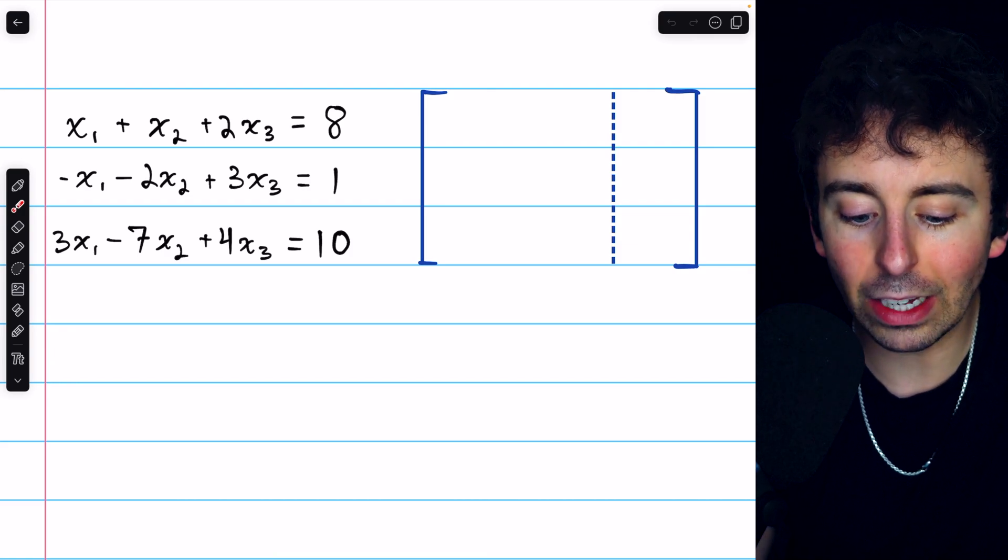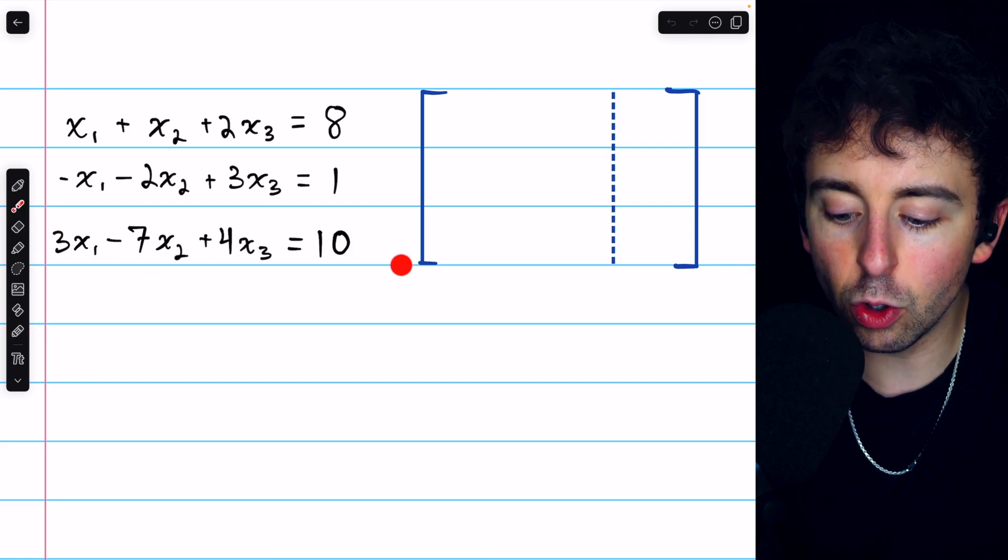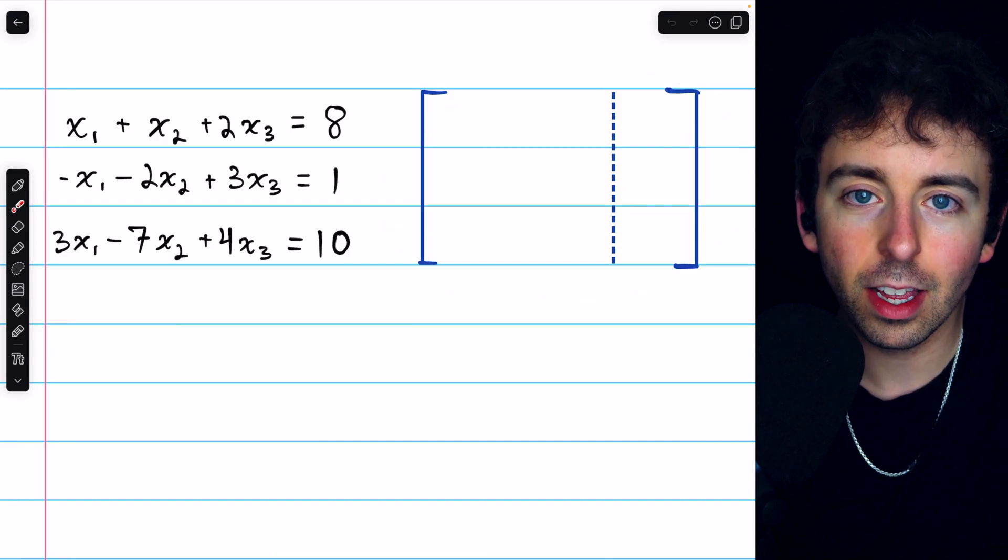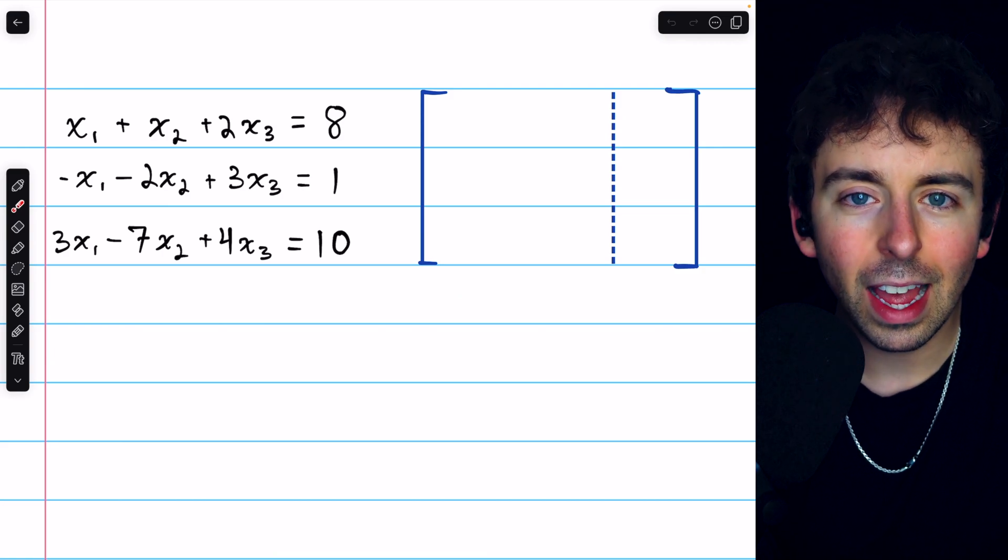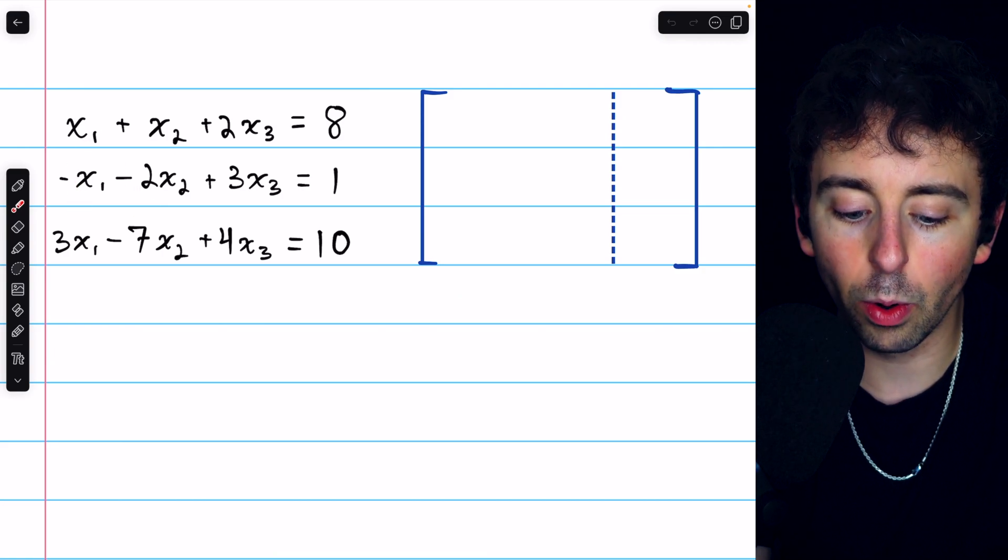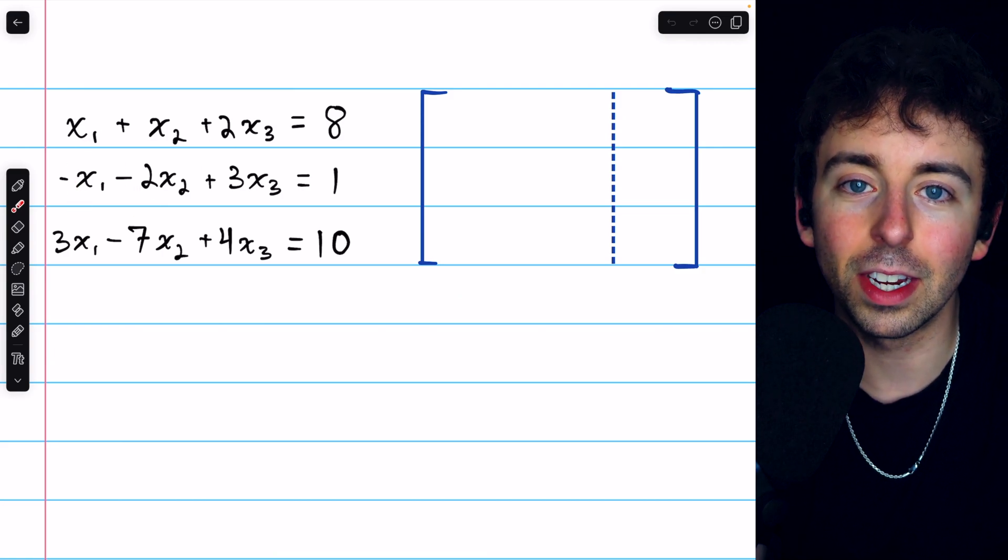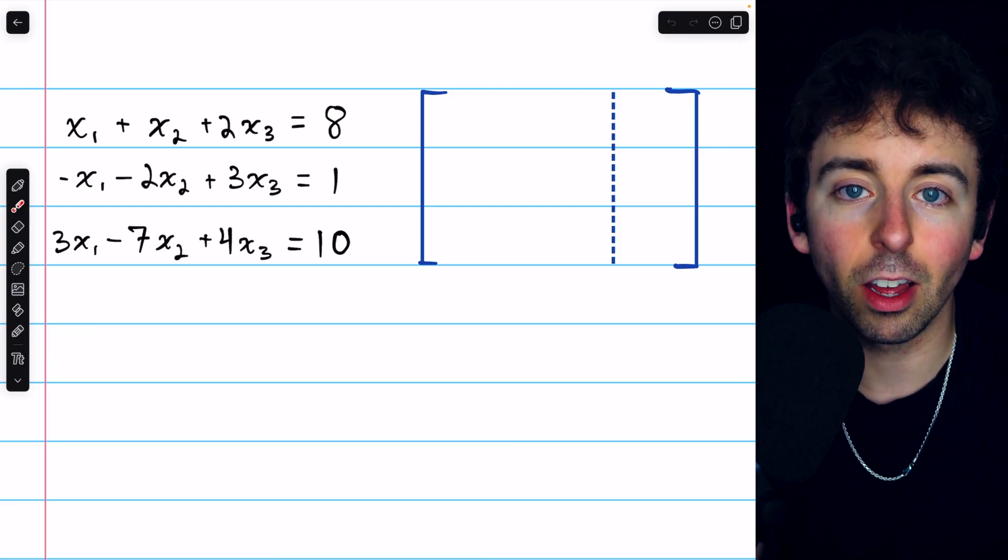To do that, we begin by turning this system into an augmented matrix. What the augmented matrix does is let us ignore the variables and just focus on the coefficients, really just focus on the numbers that are important to solving the system.